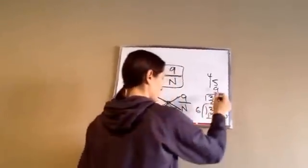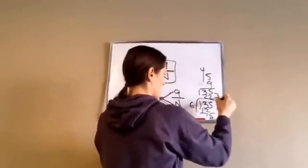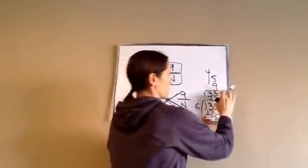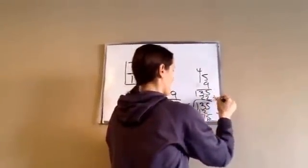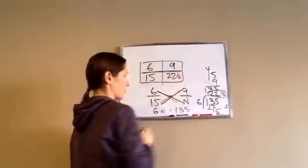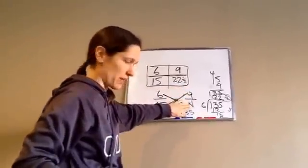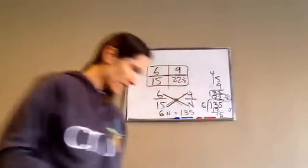So, it would end up being 22. And 3/6. 22 and 3/6, which then reduces to 1 and a half. 22 and a half is the answer. So, 6 is to 15, as 9 is to 22 and a half. And that's lesson 72.